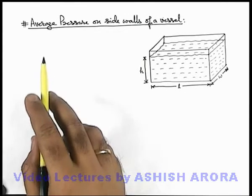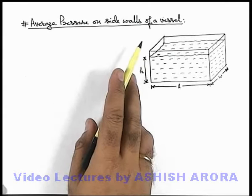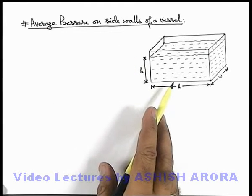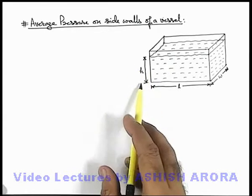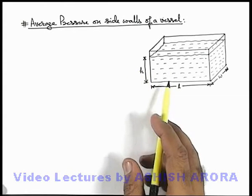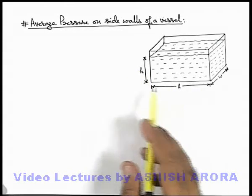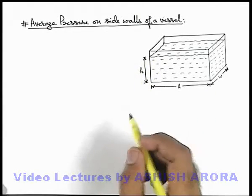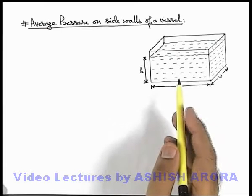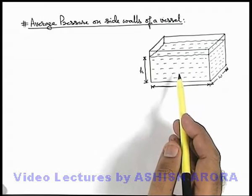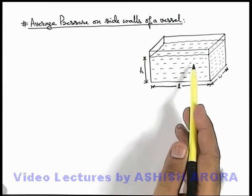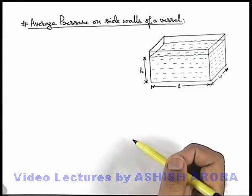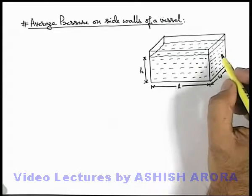Let us discuss the average pressure on the side walls of a vessel. Here we can see a vessel filled up to the top, up to a height h, with a liquid. The dimensions of the container are h, l, and w. At every point in contact with the side wall, due to fluid pressure, the force acts along the outward normal of the wall.